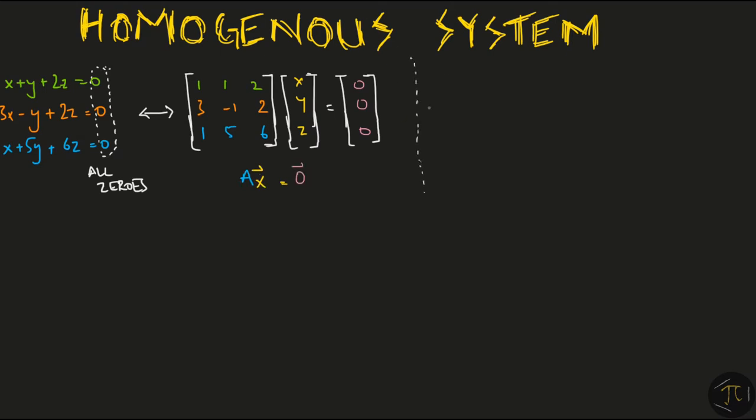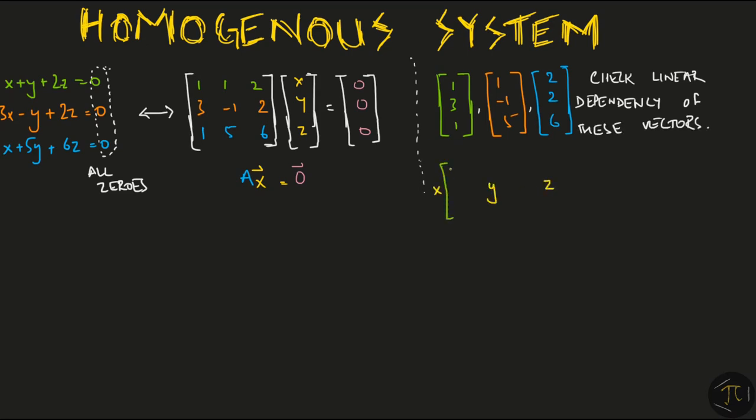Now hold this thought for a minute and look at these three vectors. Say you are asked to check the linear dependency of these vectors. By definition, you are looking for some constants x, y and z such that taking the linear combination of these three vectors gives you the zero vector. Now because of the way we define matrix vector multiplication, it is the same thing as this Ax equals zero here. So these two problems are then one and the same thing. In both cases, we are looking for x, y and z such that the equations become zero.